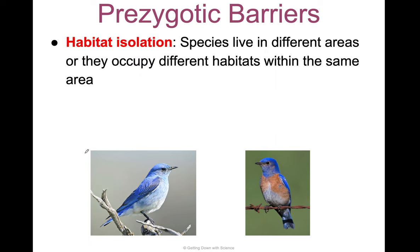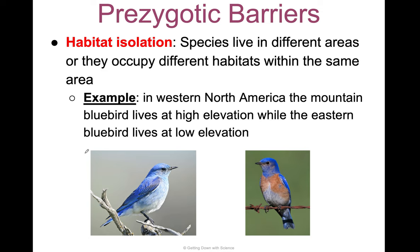Habitat isolation is literally species living in different areas, or they occupy different habitats within the same area. For example, North American mountain bluebirds live at high elevation, while Eastern bluebirds live at low elevation. Theoretically, these two individuals could mate and have viable offspring, but they never will because they live in different places — they're just never going to meet each other.